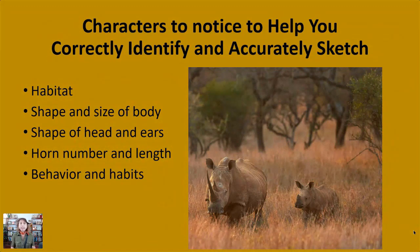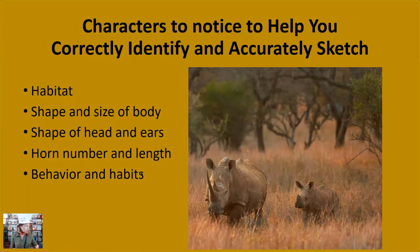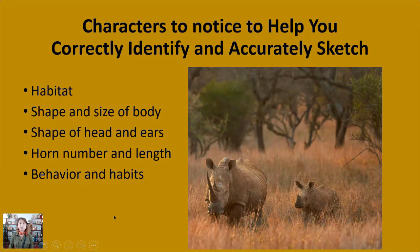Back on our African safari, there are many countries where you can see both the black rhino and the white rhino species in many national parks. What are the characteristics you want to notice to correctly identify and accurately sketch them? Notice the habitat — they have slightly different habitats — the size and shape of the body, the size of the head and ears, the number of horns. In Africa we only have two-horned species, but we want to know the relative length of those horns — the front horn compared to the back horn — and their behavior and habits.